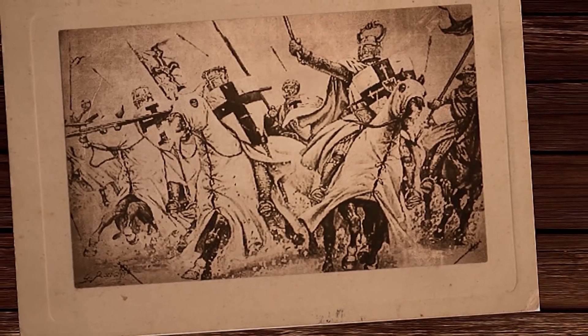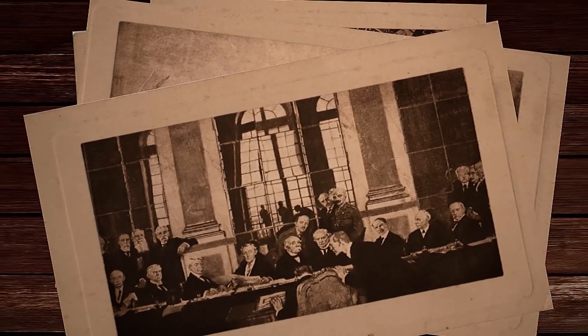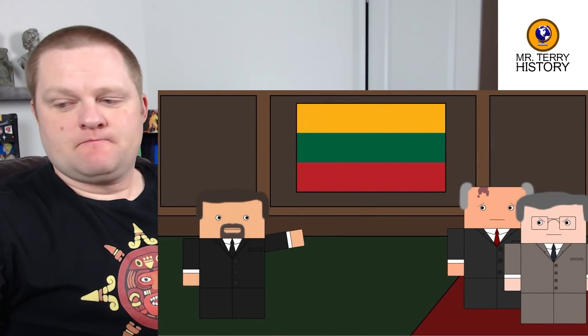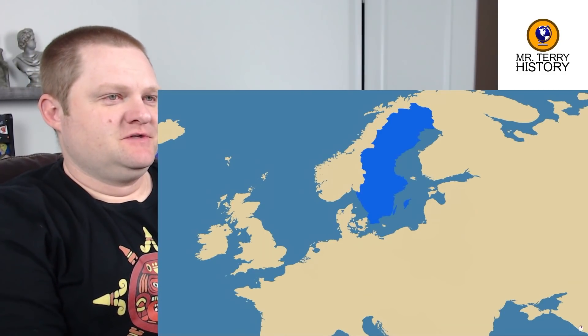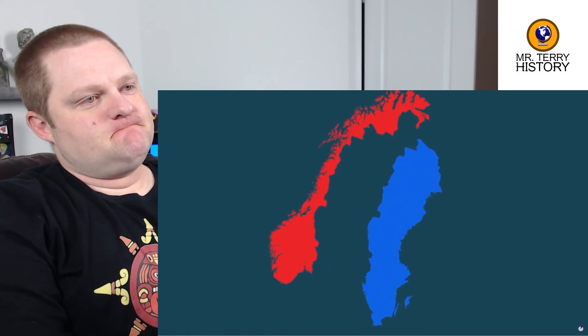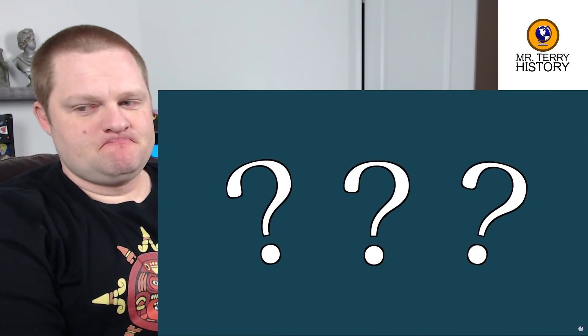If you want to see more commentary from a History Teacher, definitely hit that sub button. Love to have you around our community. Alright, with that, let's get started. Breakups are never easy, especially when your ex goes on to become a wealthy petrostate. This is what happened to Sweden, which was in a union with Norway for almost a century until their split in 1905. But what caused this dissolution? Why did Sweden and Norway break up?